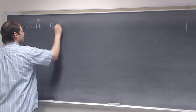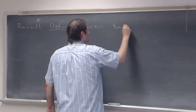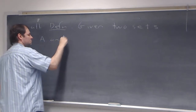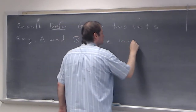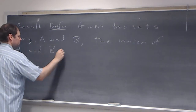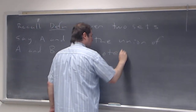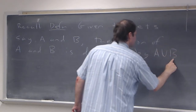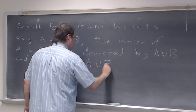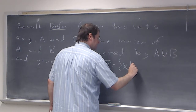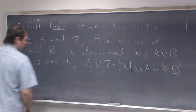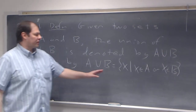As a definition, given two sets A and B, the union of A and B is denoted A∪B, and A union B is equal to the set of all elements X such that X is in A or X is in B. So to be in the union, you have to be in either A or B.